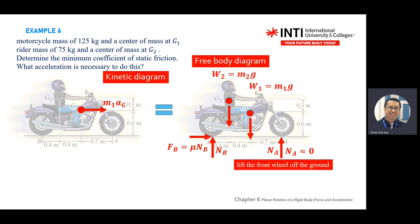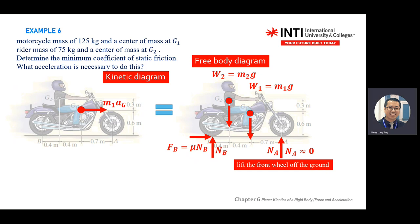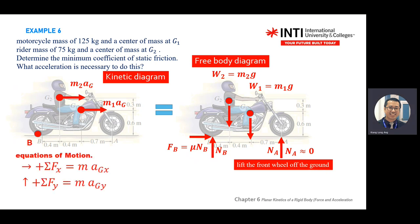MA becomes force. The purpose of doing this is because you want to use the moment for the calculation. You have two objects, so you have ma1 and ma2. The contact point is at B. Once you mark B, when you take moments, all the forces at B will cancel out.